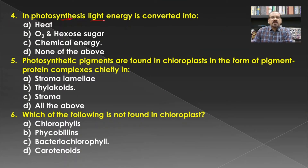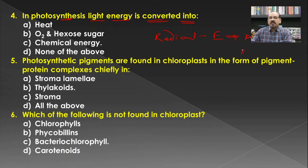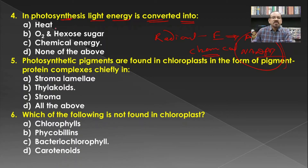In photosynthesis, the light energy is converted into what? Earlier we have seen that in photosynthesis, after absorption of radiant energy it is converted into assimilatory power, that is ATP and NADPH₂. This is a form of energy considered as chemical energy. Hence, in photosynthesis, light energy is converted into chemical energy.